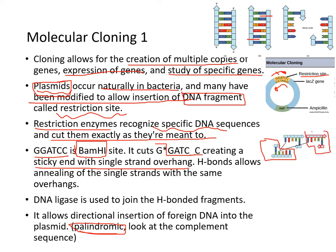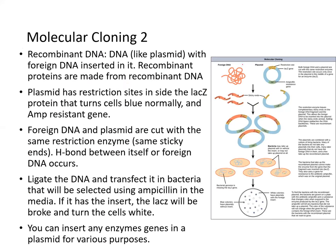This is the same sticky end from a different foreign DNA fragment — it lines up there. Then you use ligase to join the fragments. That process is shown in more detail here. The plasmid has two things: an ampicillin resistance gene, so the growth medium will have ampicillin in it; and a functioning lacZ gene. Recombinant DNA is DNA with foreign DNA inserted in it, like a plasmid with foreign DNA. Then you can produce recombinant proteins.